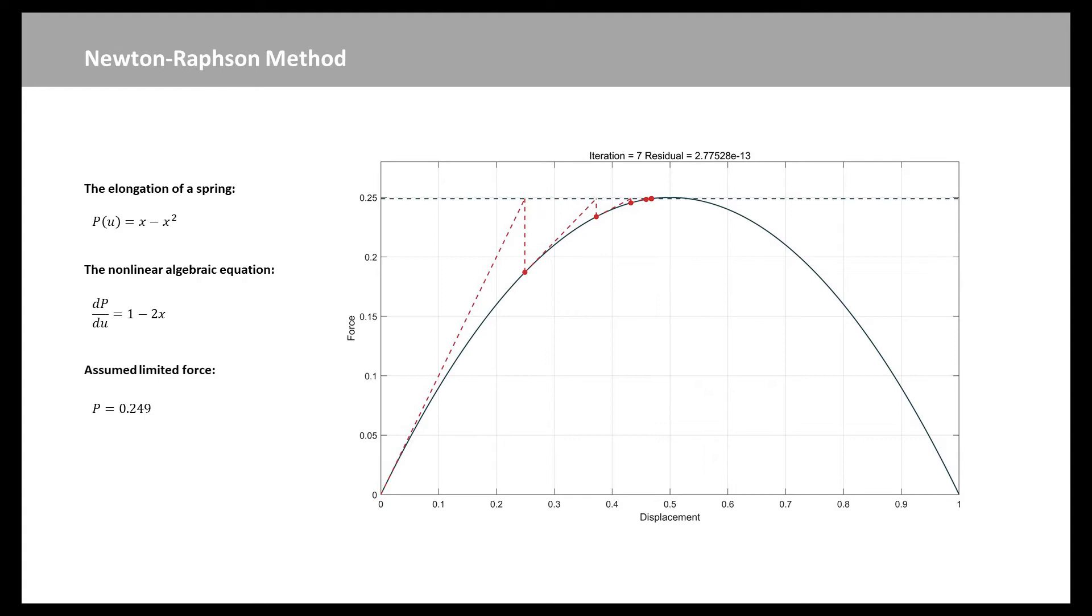Since the problem has a single variable, the problem becomes a nonlinear algebraic equation. In this case, when an iteration is 7, the final answer is reached.